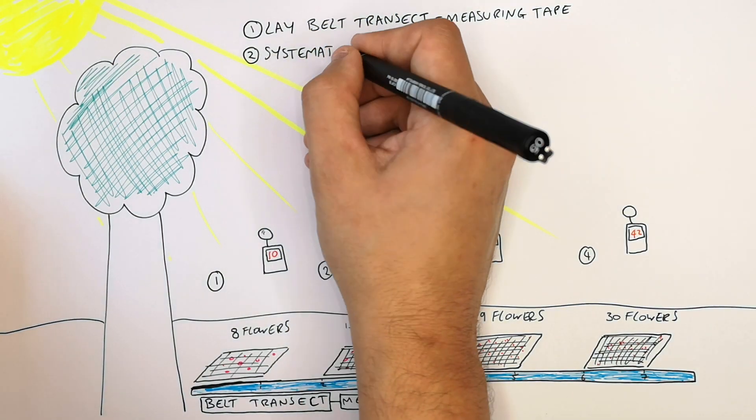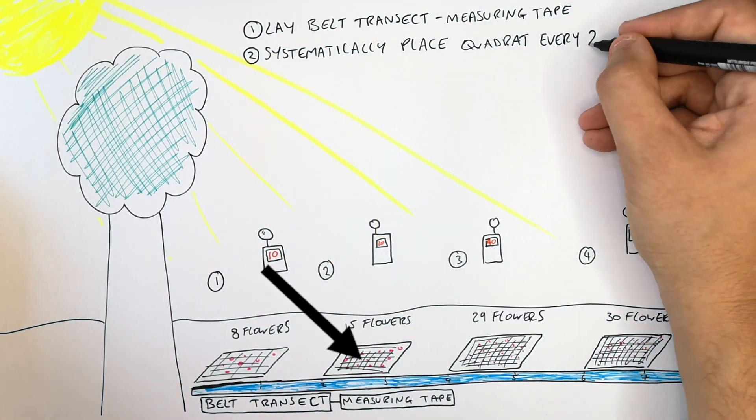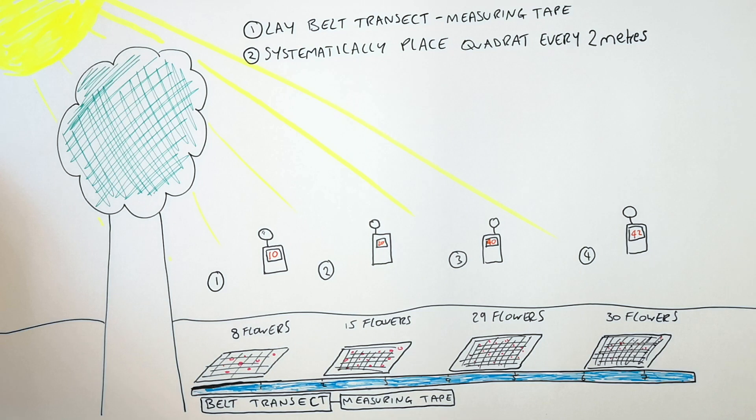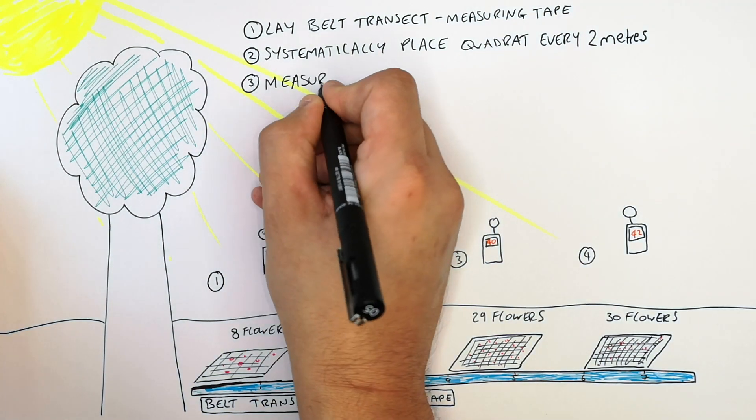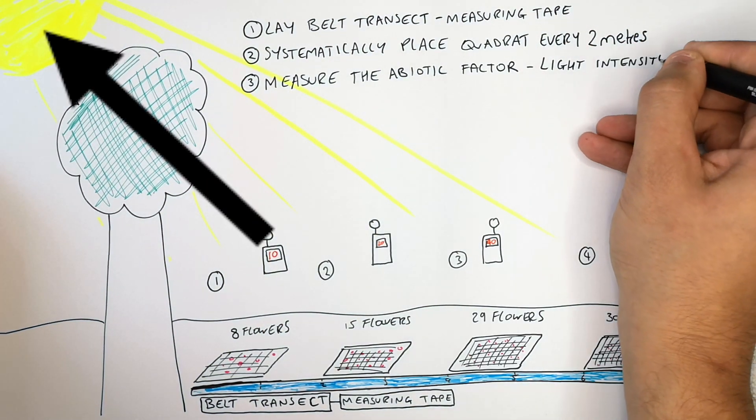Then you systematically place the quadrat every 2 metres. It doesn't have to be every 2 metres, just in this example I've done that. It has to be a regular interval. You then measure the abiotic factor, in this case it was light intensity.